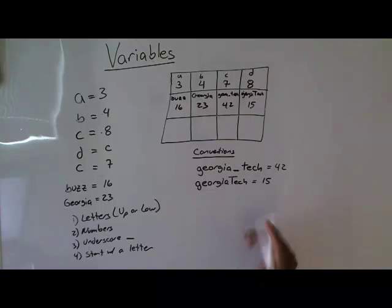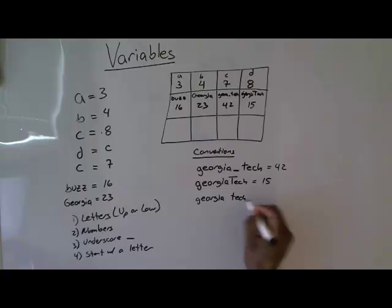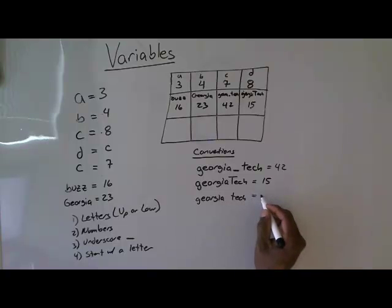You cannot have a space in a variable name, so you could not do Georgia space then Tech. The computer would not recognize them, they would try to recognize these as two separate variable names. So you could not do this, so that's a no-go.